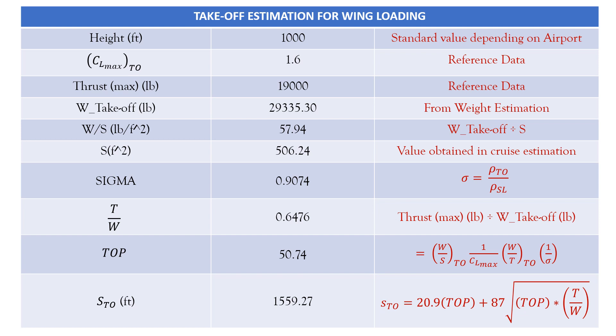Estimating the takeoff estimation for wing loading, considering a height of 1000, which is a standard height for an aircraft airport. The CL max as considered before from the literature, and again the thrust max can be considered from the literature and from weight estimation. We have got our weight at takeoff, and then wing area S as estimated in the cruise will be the same value, and using the weight at takeoff and wing area at cruise will determine the W by S value. We have a sigma whose formula is given, and using the formula we can get our sigma value of 0.9074. Thrust to weight ratio, using the values we have got 0.6476, and takeoff parameters as discussed in the formulae, we get a value of 50.74. And using this takeoff parameter will calculate our takeoff distance STO and we get a value of 1559.27 feet.